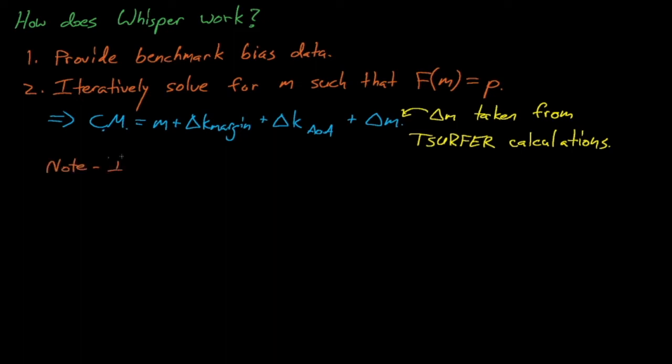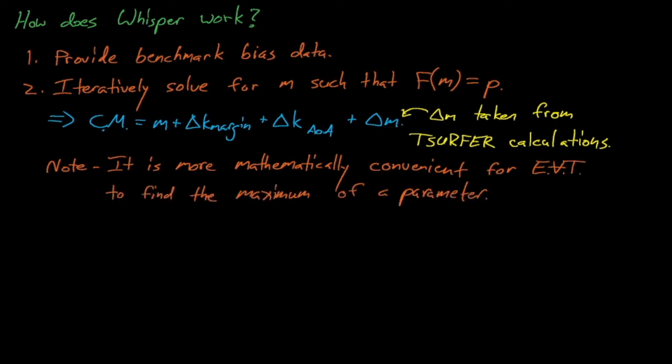This might go too far into the weeds, but it's worth noting that it is more mathematically convenient for extreme value theory to estimate the maximum credible value of a parameter rather than the minimal credible value. Thus, when we feed the computational biases into whisper, it actually inverts the biases so that it finds the most extreme value of the negative value of these biases.